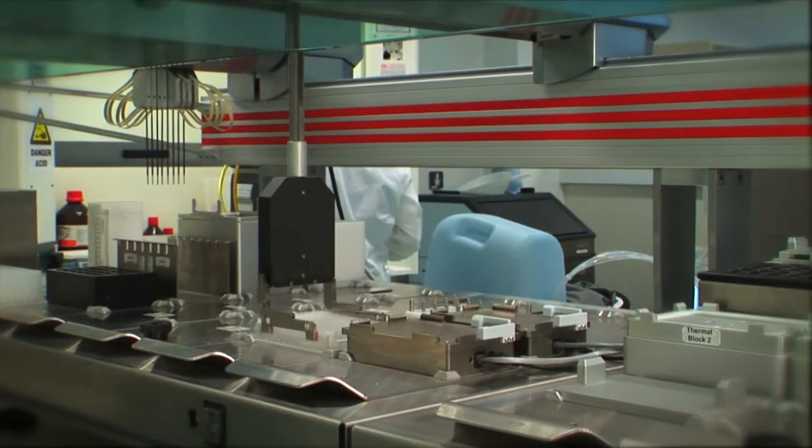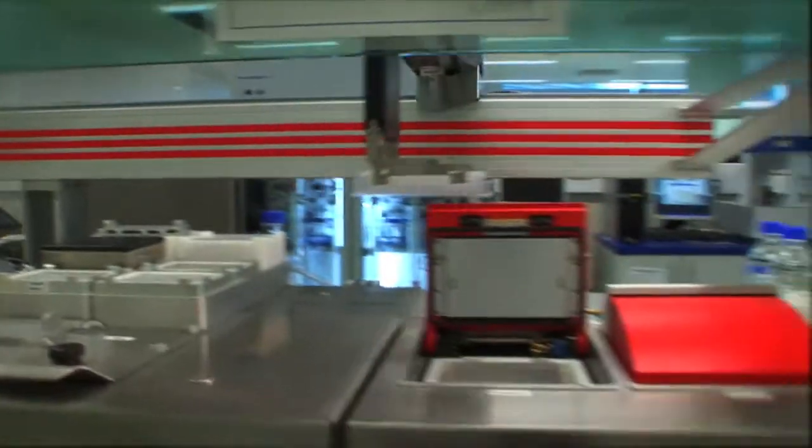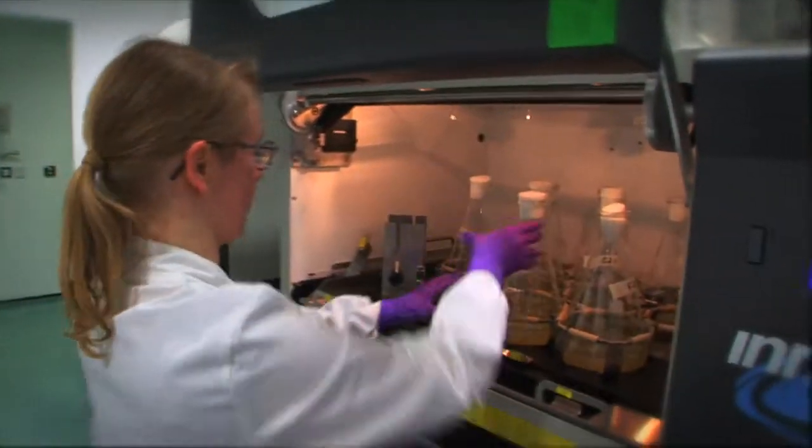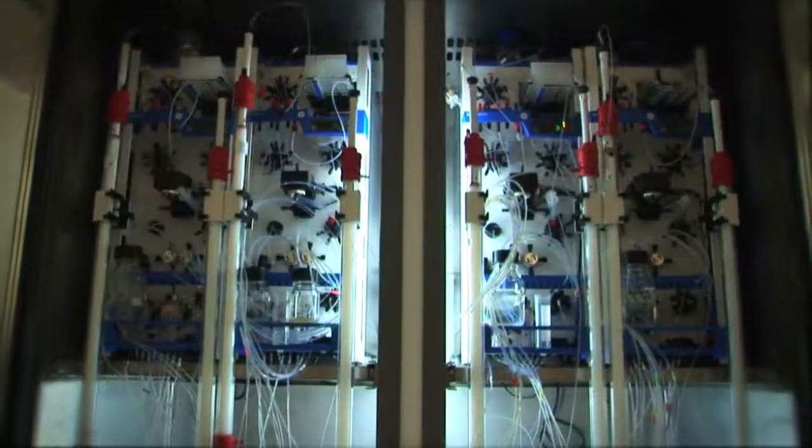We start with the DNA - this is the code which will tell us what the protein is. We select from our catalogue the DNA codes and then we use bacteria cells to actually manufacture the protein itself. Then we take the protein out of the bacteria using various machines and instruments that we have in the laboratory.